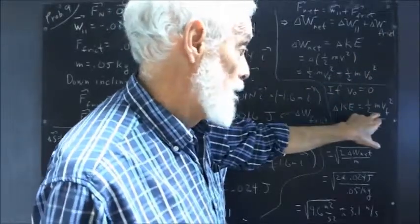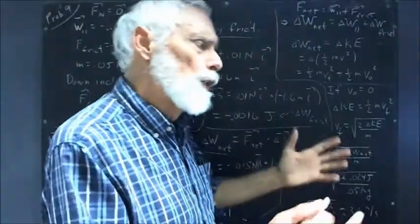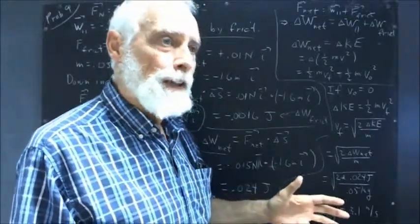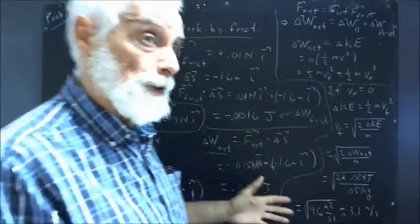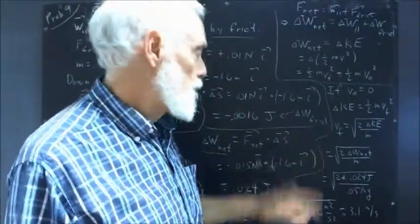If v_naught is zero, then the change in kinetic energy is equal to one-half mv_f squared. Why? Because v_naught is zero, so the negative one-half mv_naught squared is just minus zero, and we're just left with one-half mv_f squared. Now, that makes intuitive sense. If you start at velocity zero, you've got no kinetic energy. So the only kinetic energy change you have is equal to the final kinetic energy.